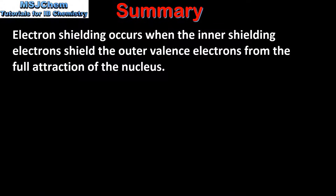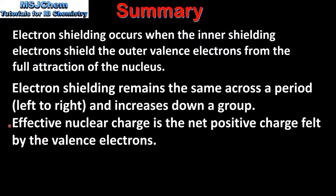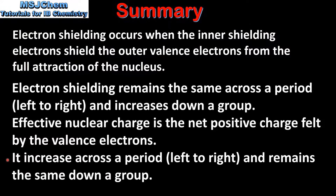To summarize: electron shielding occurs when the inner shielding electrons shield the outer valence electrons from the full attraction of the nucleus. Electron shielding remains the same across a period left to right and increases down a group. Effective nuclear charge is the net positive charge felt by the valence electrons — it increases across a period left to right and remains the same down a group.